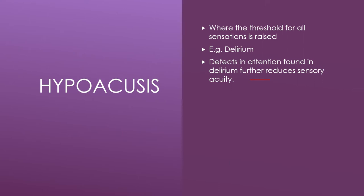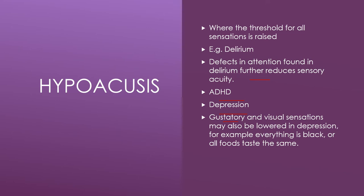People with dementia who develop infections spreading to the brain can have further problems with their sensory system. People with ADHD who develop an infection also have a raised threshold of sensation. In severe depression, gustatory — meaning taste — and visual sensations may also be lowered; for example, everything appears black, or all food tastes the same, because depression raises the threshold for sensation so food and colors look dark and dull.